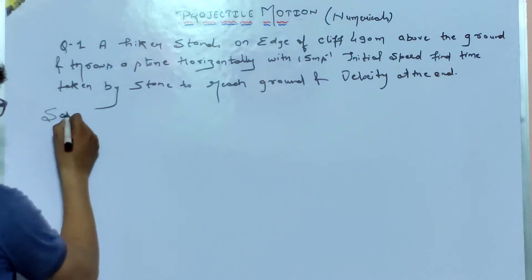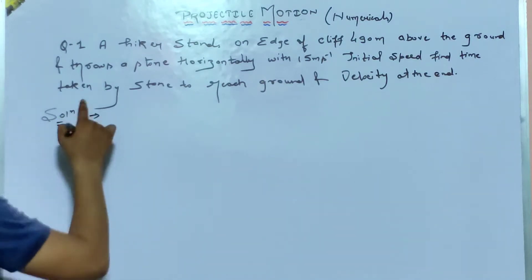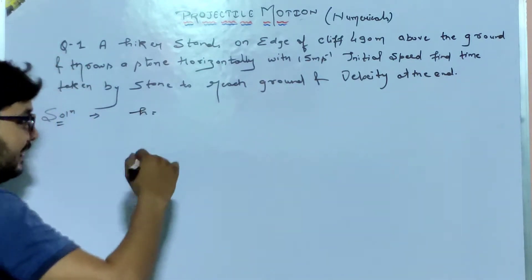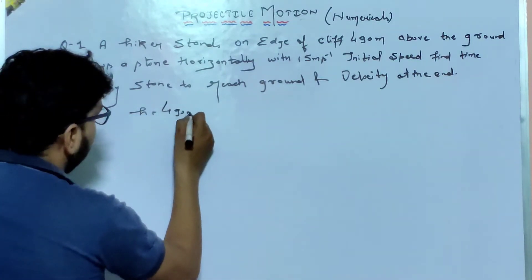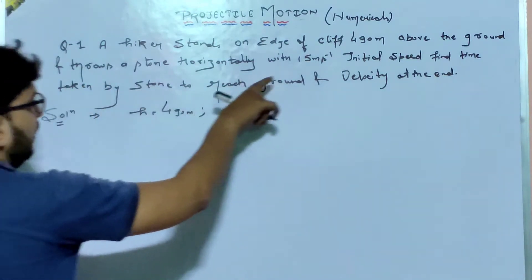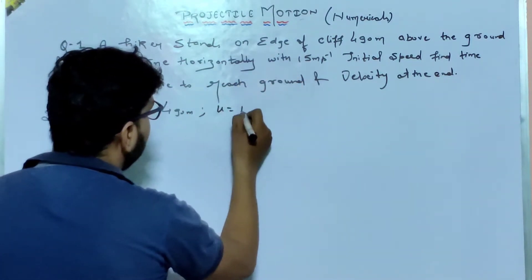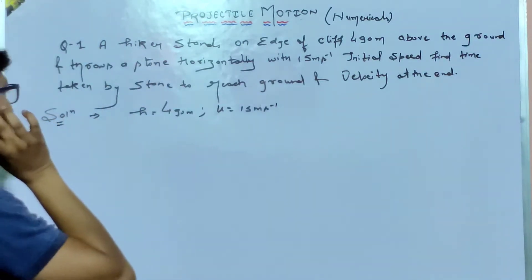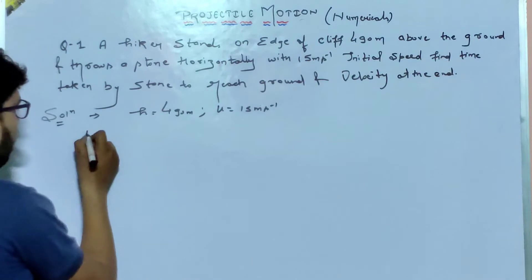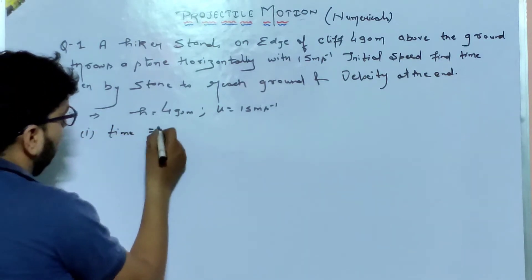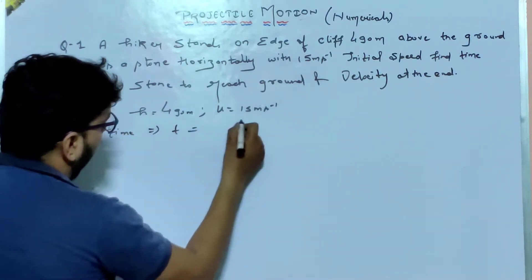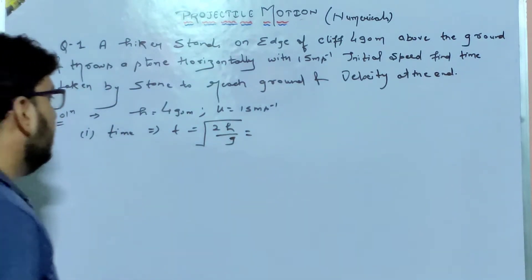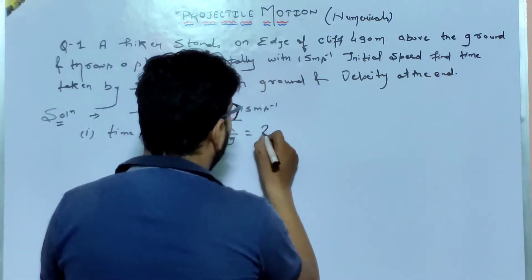Now let's write down the given part. Height h = 490 meters, and initial velocity u = 15 meters per second. To calculate time, we use the formula: t = √(2h/g).